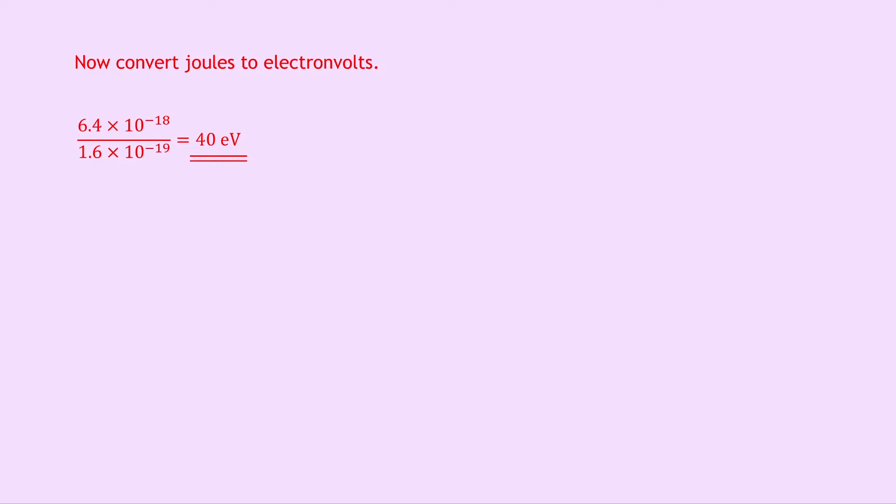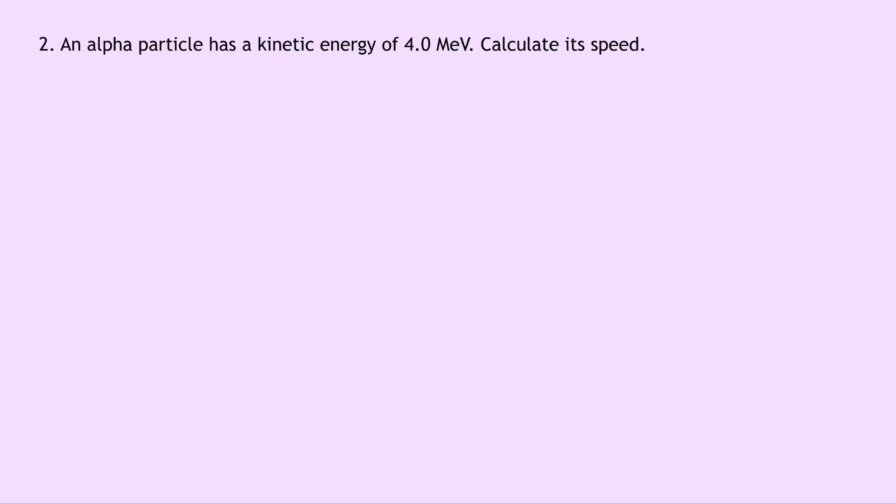A quicker way to do this part B would just be to realise that the charge is twice as big as the charge in part A, and therefore the final kinetic energy in electron volts will actually be twice as big. Lastly question 2 says that an alpha particle has a kinetic energy of 4.0 mega electron volts. Calculate its speed.